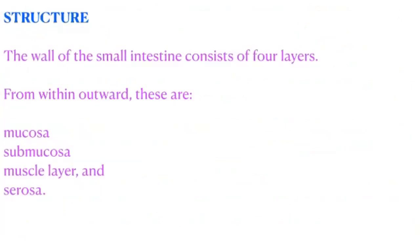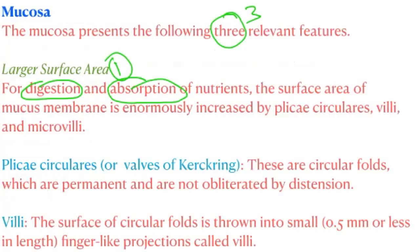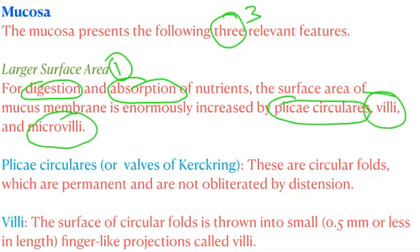Coming to the microstructure: the small intestine consists of four layers from within outwards — mucosa, submucosa, muscular layer, and serosa. The mucosa has three relevant features. The first is a larger surface area for digestion and absorption. The surface area of the mucosal membrane is enormously increased by plicae circularis, villi, and microvilli — almost 30-fold. Plicae circularis are the valves of Kerckring, permanent circular folds not obliterated by distension.